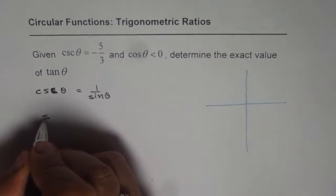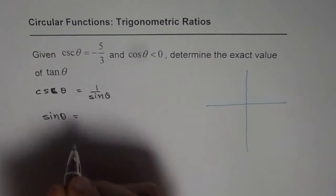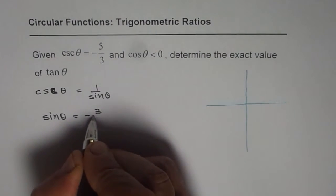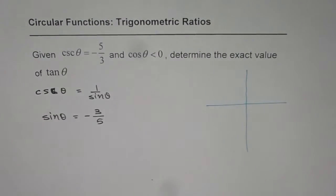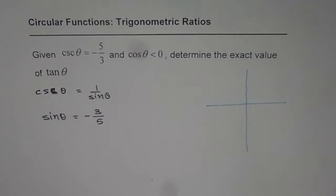So from here we can write down that sin theta equals minus 3 over 5. So you can find the reciprocal of this number and get the value of sin theta.